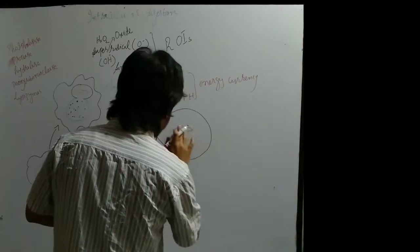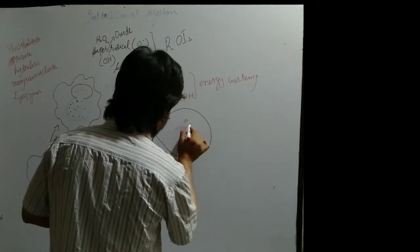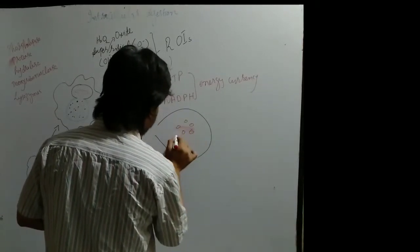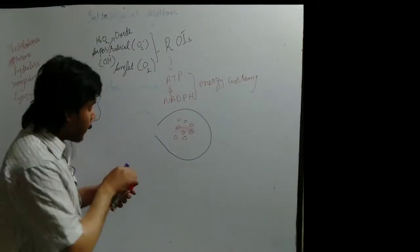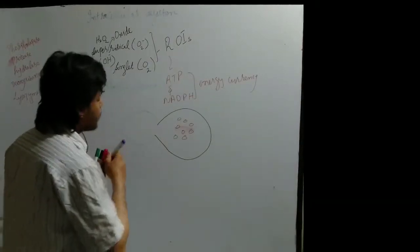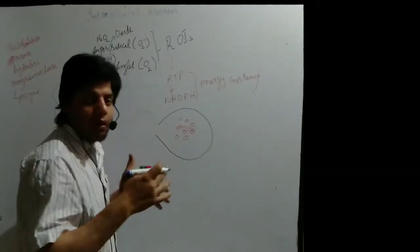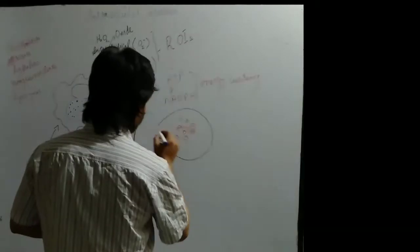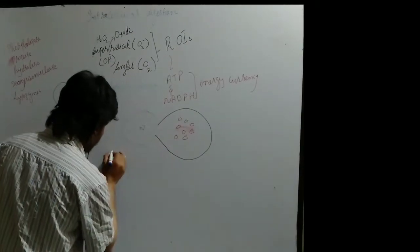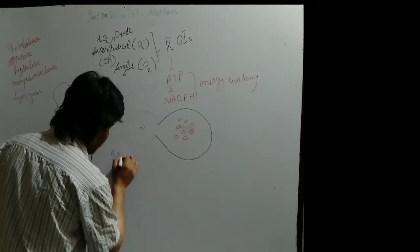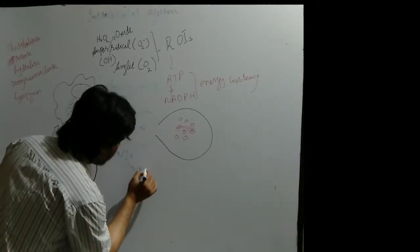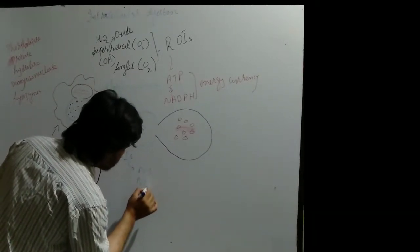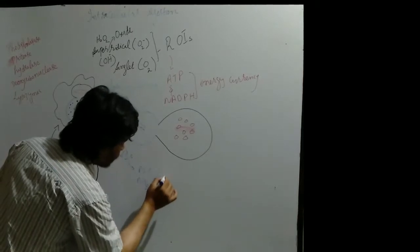This bacterial cell is then converted into small fragments. The lysosomes also produce molecules which we call RNIs — reactive nitrogen intermediates. These reactive nitrogen intermediates contain nitrogen oxide, nitrogen dioxide, and nitrogen trioxide.